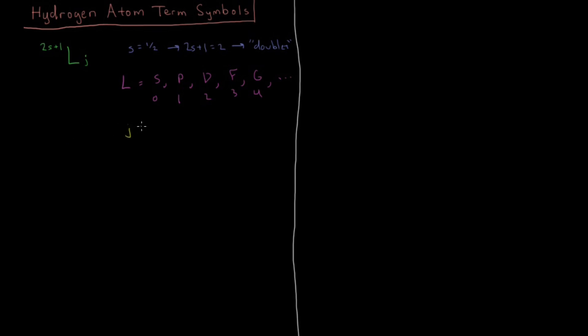And then J, there's two possible values for J. When we have one electron like this, we have J equals L plus S, and J equals the absolute value of L minus S. So let's look at some examples and see what this ends up being in practice.